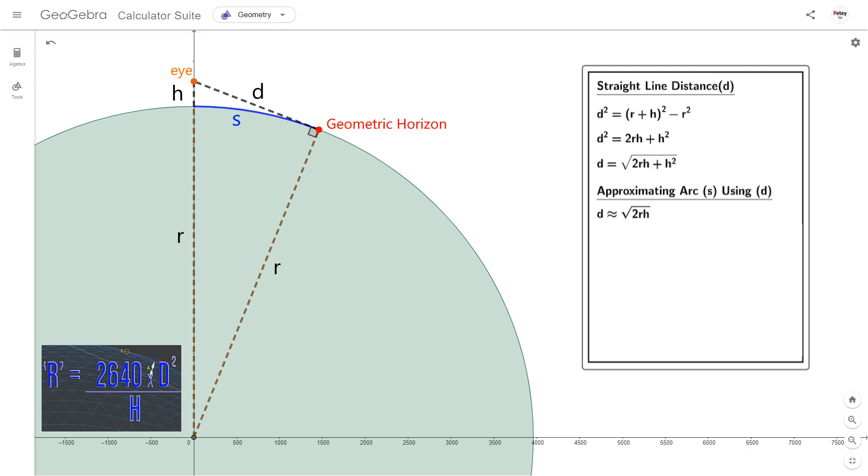Now d doesn't equal the arc length s, which is the exact surface distance to the horizon. But here we're going to use d to approximate s, as long as the observer height isn't too excessive. And you'll notice the h squared has been dropped, due to it being relatively tiny.